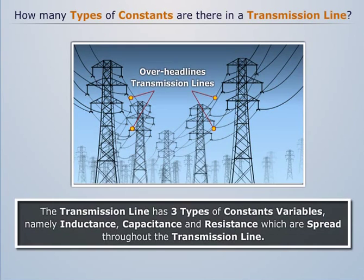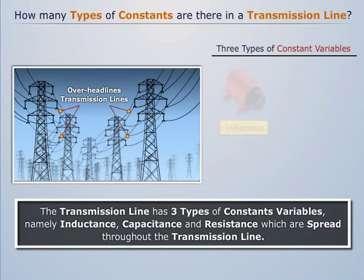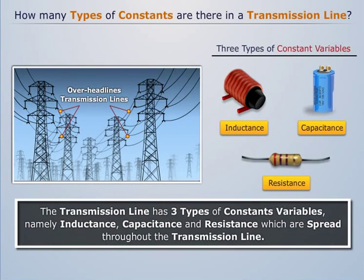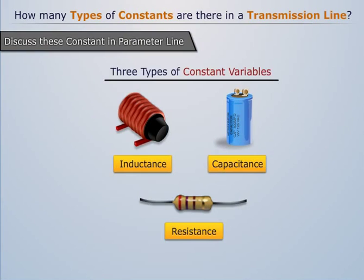The transmission line has three types of constants, variables namely inductance, capacitance and resistance which are spread throughout the transmission line. Now we discuss these constants or parameters in detail.